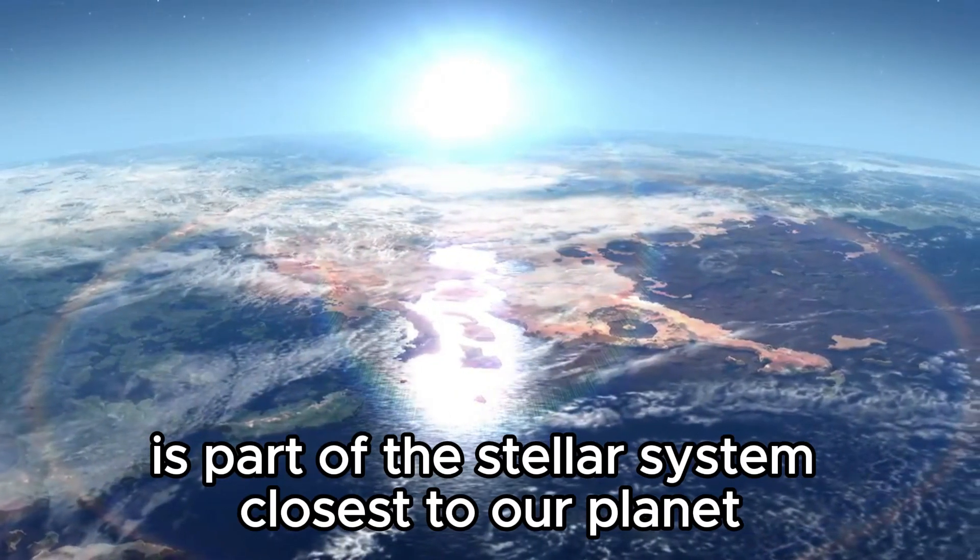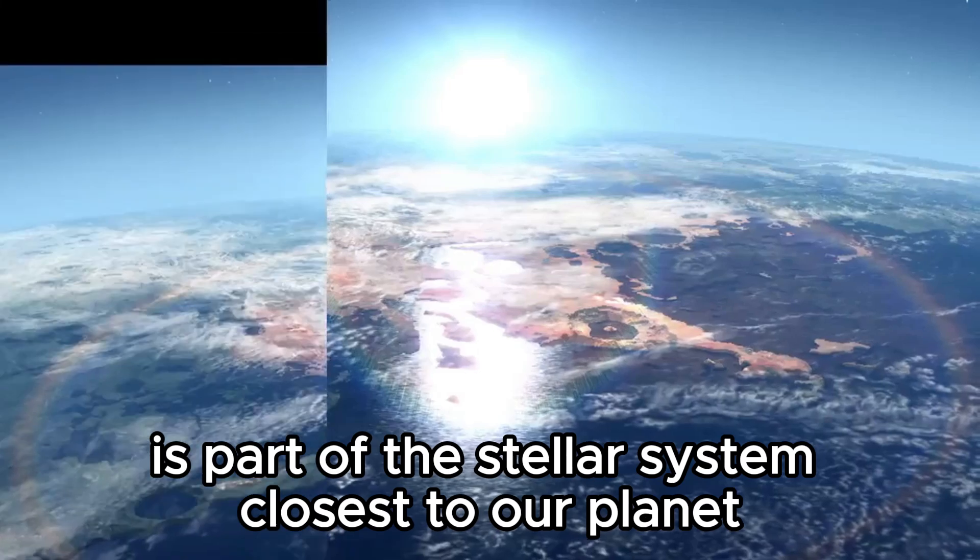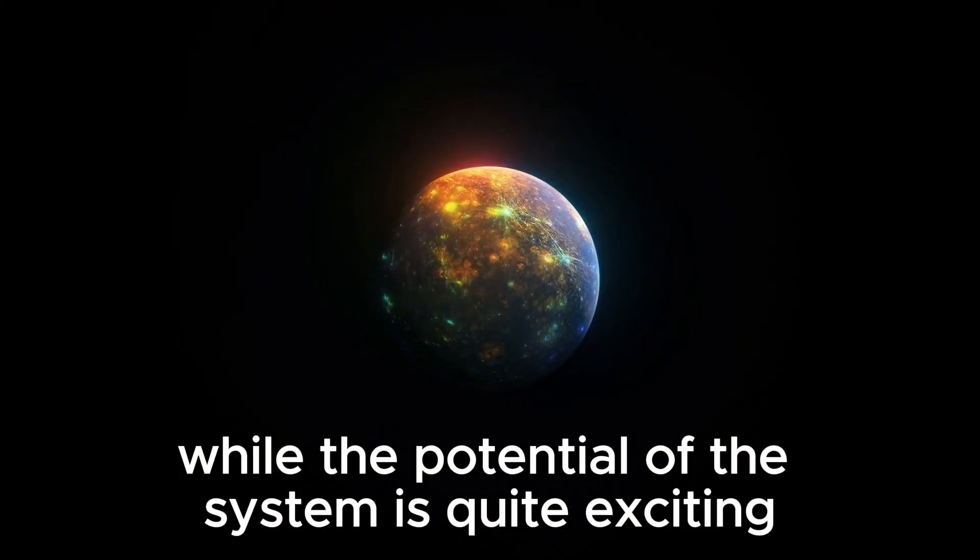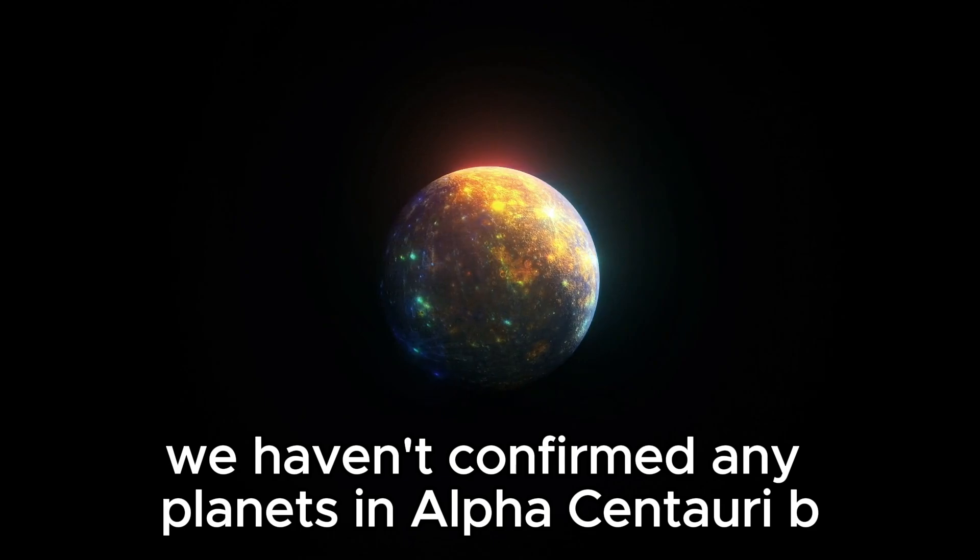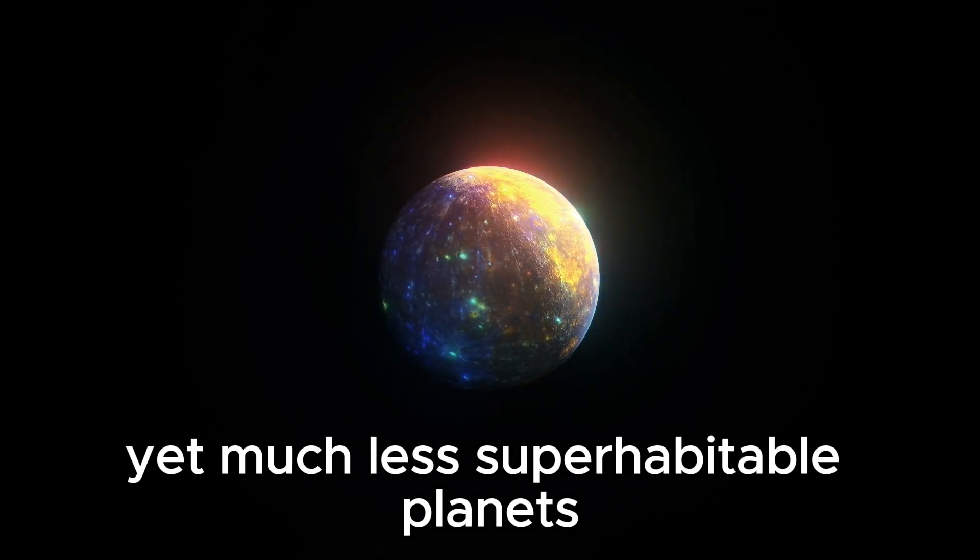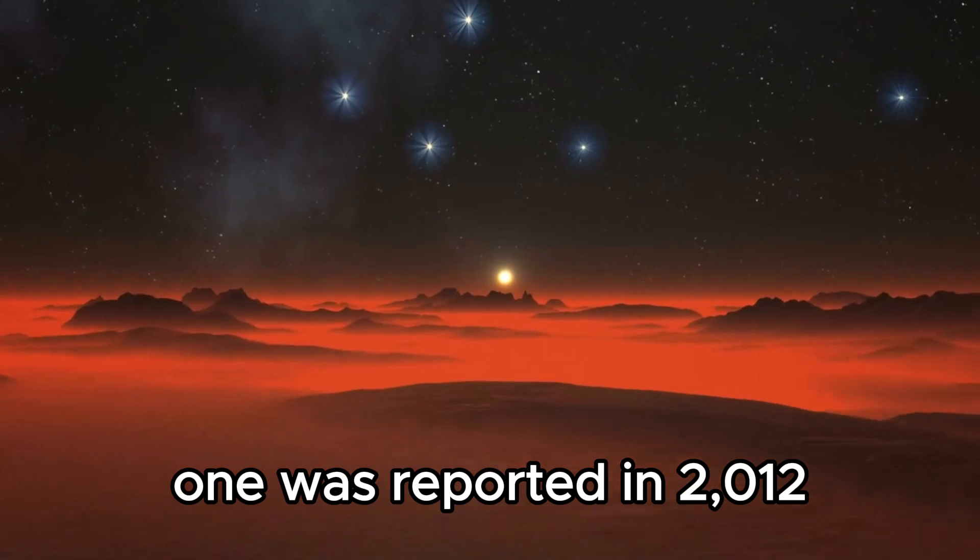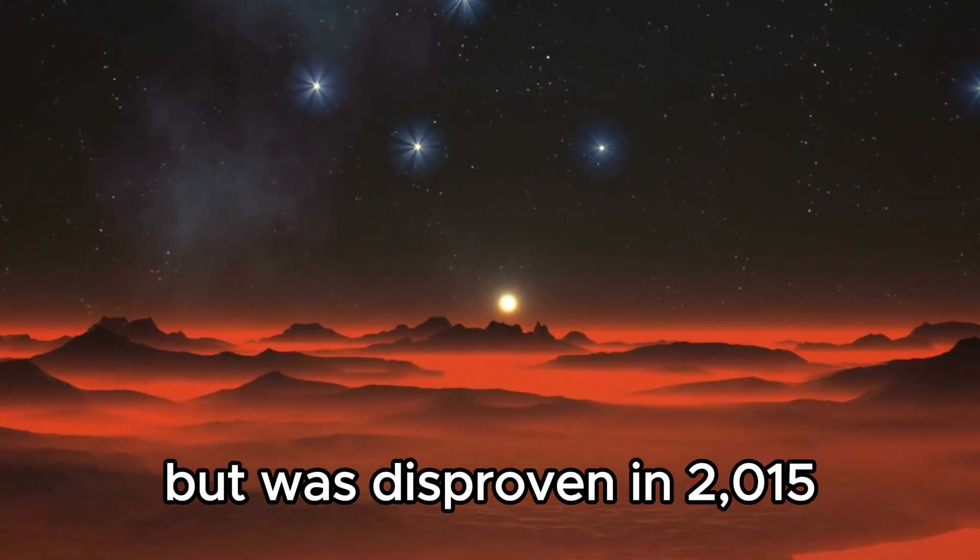Alpha Centauri B is part of the stellar system closest to our planet, Alpha Centauri. While the potential of this system is quite exciting, we haven't confirmed any planets in Alpha Centauri B yet, much less superhabitable planets. One was reported in 2012 but was disproven in 2015.